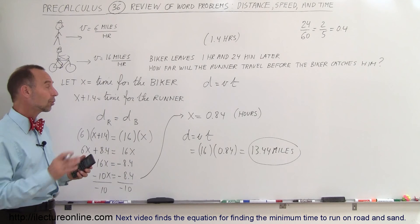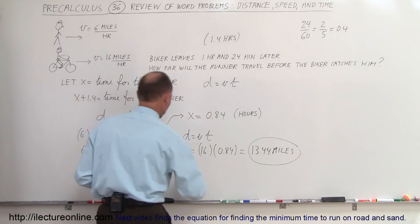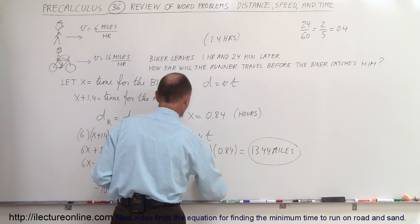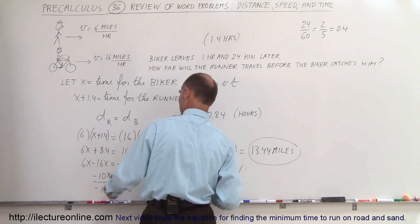Now if you want to make sure we did this correctly, let's use the distance equals velocity times time for the runner and see if we get the same result. So distance equals velocity times time for the runner, which would be 6 miles an hour times x plus 1.4.